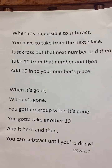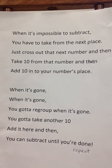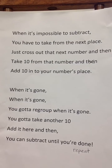When it's impossible to subtract, you have to take from the next place. Just cross out that next number and then take 10 from that number and add 10 into your number's place. When it's gone, when it's gone, you gotta regroup. When it's gone, you gotta take another 10, add it here, and then you can subtract.